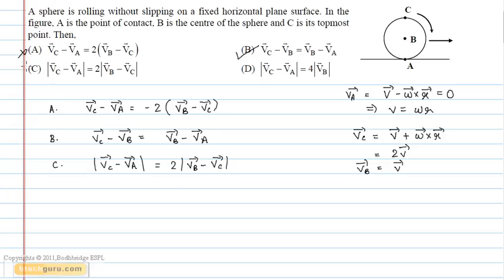Therefore option D: modulus of Vc vector minus Va vector equals 2V and the mod of Vb vector equals V. Therefore, option D is incorrect.